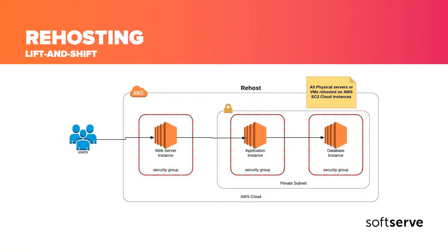Lift and shift is the simplest approach. We take everything the customer has on-premises — web services, applications, databases — and simply move them to the cloud as-is, without any improvements or changes in architecture. It's the cheapest and fastest approach. We don't need involvement from developers, and based on our experience in migration projects, most customers usually start with this.